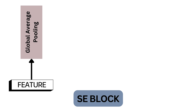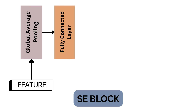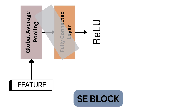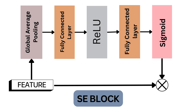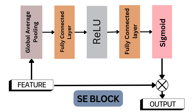In the squeeze module, global spatial information is accumulated through the utilization of global average pooling. Simultaneously, the excitation module focuses on capturing channel-wise relationships, generating an attention vector via fully connected layers and non-linear activations such as ReLU and Sigmoid. Subsequently, each channel of the input feature undergoes scaling by multiplying with the corresponding element in the attention vector. This process underscores the adaptability of channel attention through dynamic feature scaling based on learned relationships.